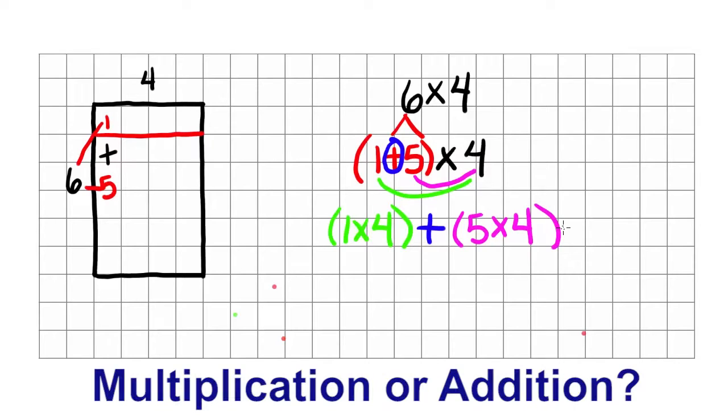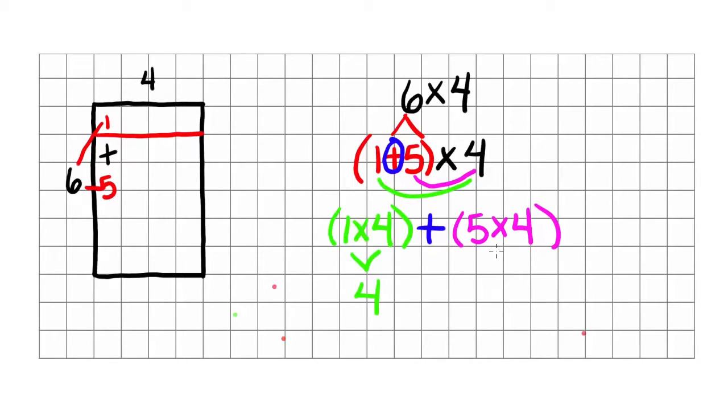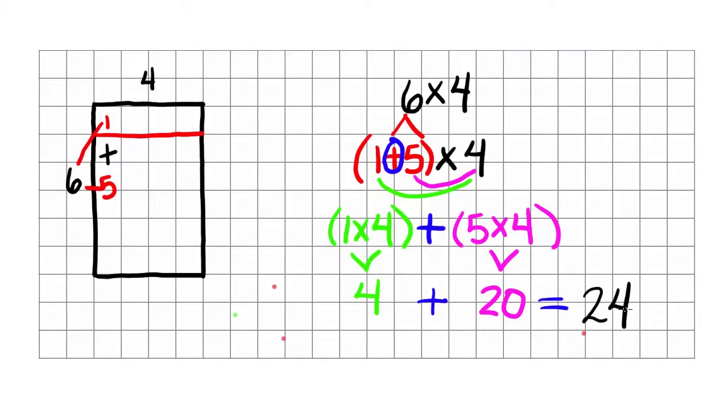Remember order of operations, which comes first, multiplication or addition? Remembering that we are finding the area, that will help me remember that I multiply first. 1 times 4 is 4, 5 times 4 is 20, and then I add those two products together to equal 24.